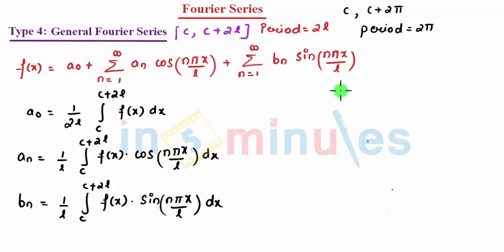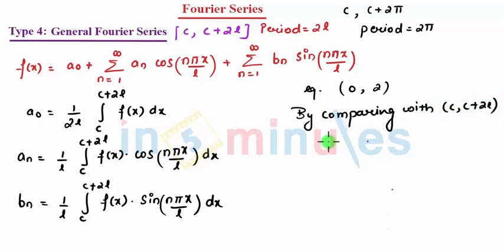So this is the way. For example, if I mention the range 0 to 2, by comparing with C to C plus 2L, you can see your value of C is 0. So C plus 2L equals 2, meaning 2L equals 2, where L equals 1.